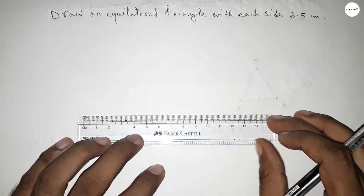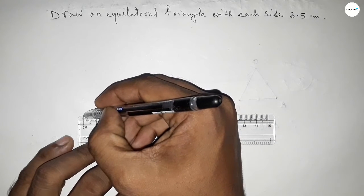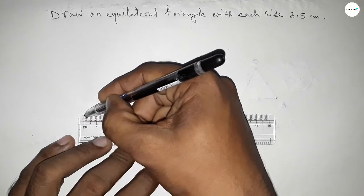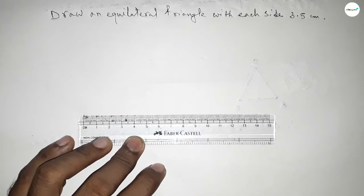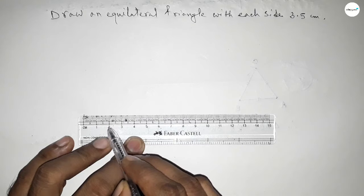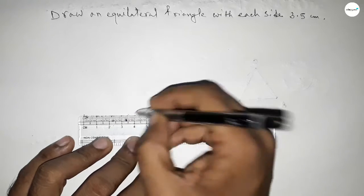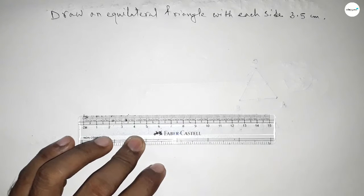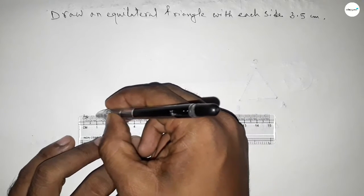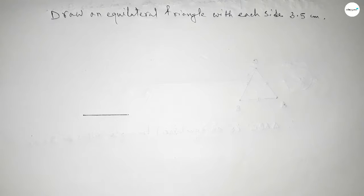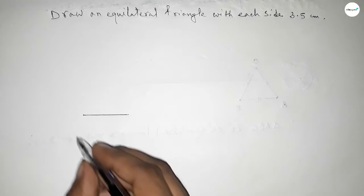Okay, by using a scale. So this is starting zero and this is one, two, three and this is three point five centimeters. So first drawing a line of length three point five centimeters by using scale. Okay, now this is A and B.